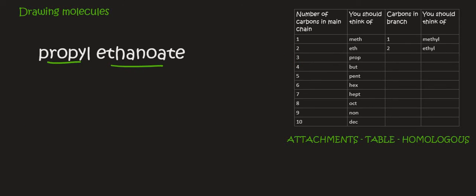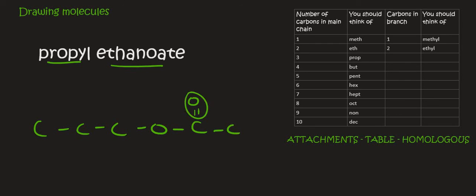Here's propyl ethanoate. The alcohol part is three carbons. Then just remember the oxygen. Then the carboxylic acid is two carbons, and always remember the double bond oxygen. The rest will just be hydrogen, always making sure that each carbon has four bonds. And so there we go — that's it for now. I'm sure you can see that the drawing process is a lot easier than the naming process. You still need to practice as it does get a bit weird sometimes, but it's not going to get any more difficult than what I've shown you.